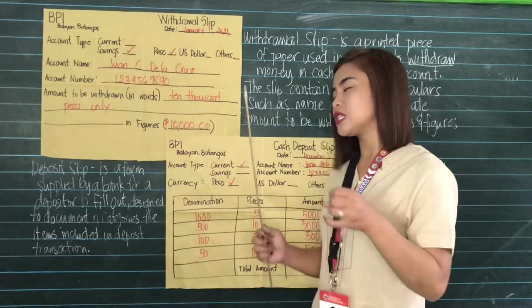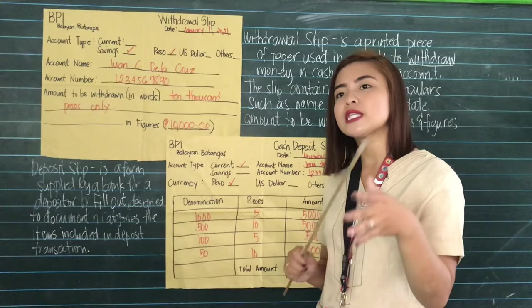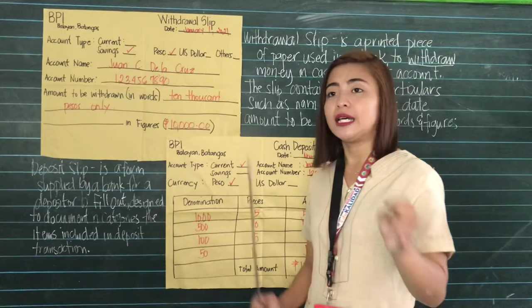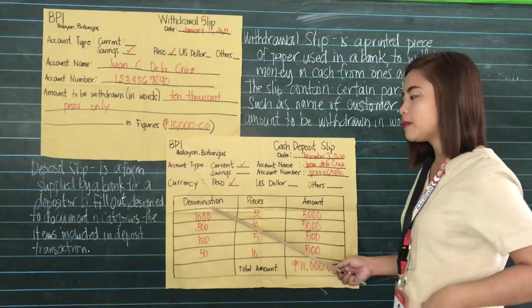The denomination refers to the bank note or the face value of the money that you are to deposit in a bank account. The denominations would be the 1,000 peso bill, the 500 peso bill, the 100 peso bill, the 200 peso bill, the 50 peso bill, the 20 peso bill, and coins as well — the 25 centavos, the 1 peso coin, the 5 peso coin, and the 10 peso coin.